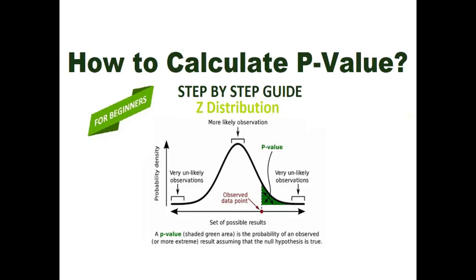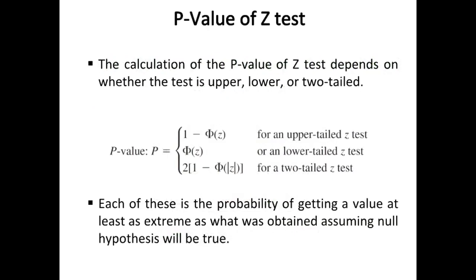How to calculate p-value: a step-by-step guide with examples of z distribution. The calculation of the p-value of a z test depends on whether the test is upper, lower, or two-tailed. Each of these is the probability of getting a value at least as extreme as what was obtained, assuming the null hypothesis is true.